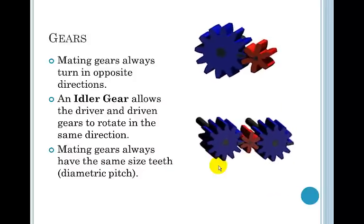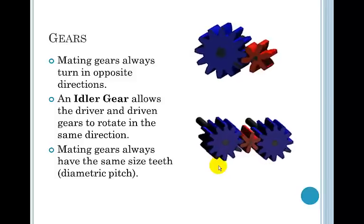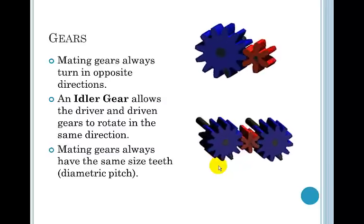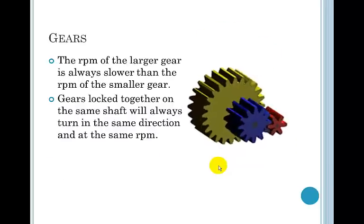If you're going to mate gears together, they always have the same size teeth or we say they have the same diametric pitch. Usually, instead of teeth, we just say pitch. They have the same size teeth, we say they have the same pitch on the teeth.